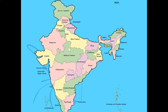India has a total area of 32,87,263 square kilometers and is the 7th largest country in the world. India is situated north of the equator, between 8°4' and 37°6' north latitude and 68°7' and 97°25' east longitude.